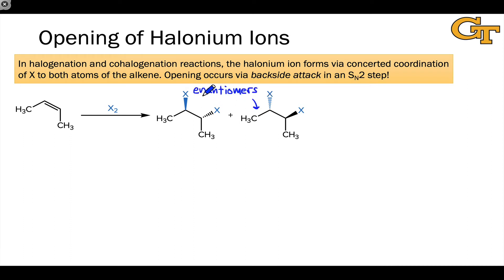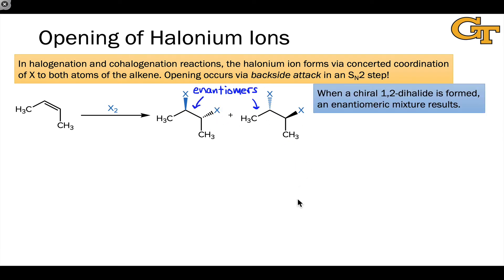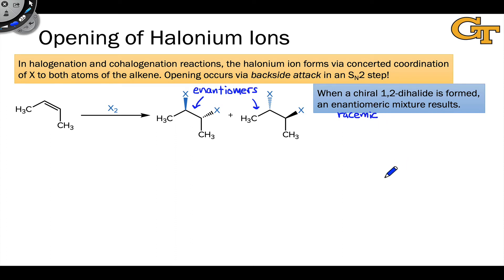What we can say in general about these additions of X2 to alkenes is that if a chiral 1,2-dihalide is generated — if the product is chiral — we'll get an enantiomeric mixture, and more specifically a racemic mixture of the two enantiomers, a 50-50 mixture of the two enantiomers.